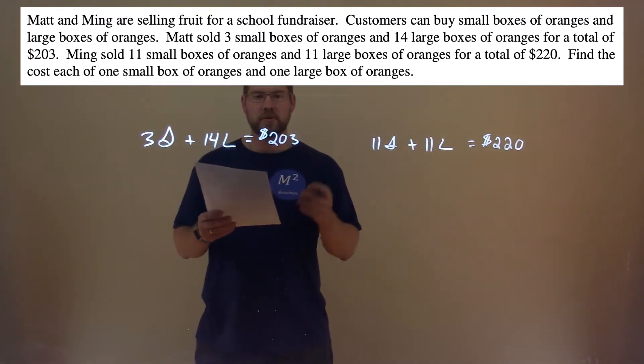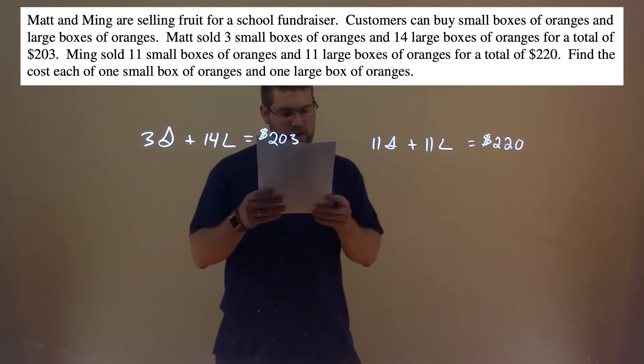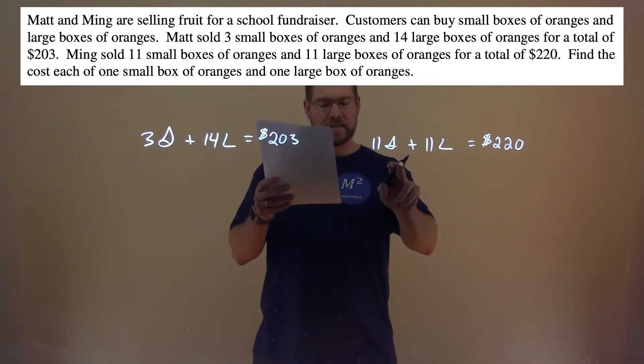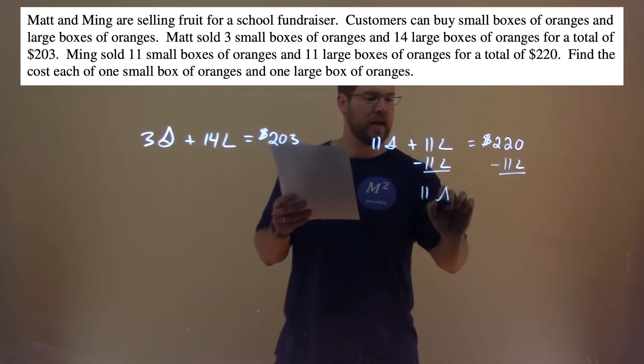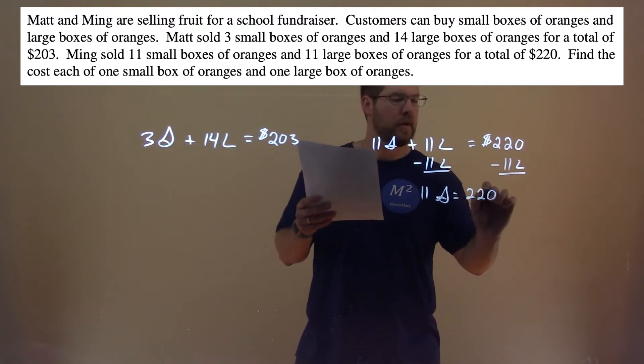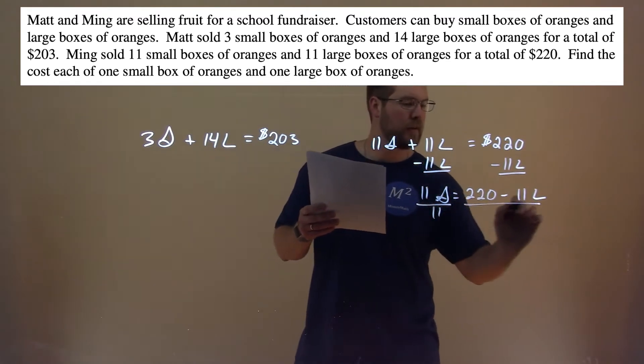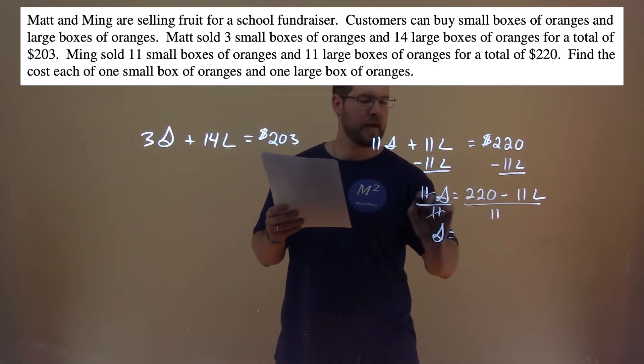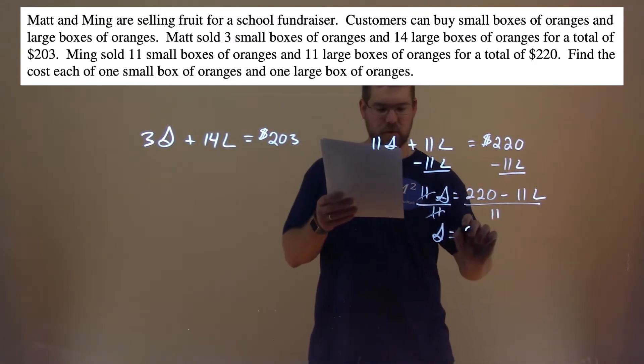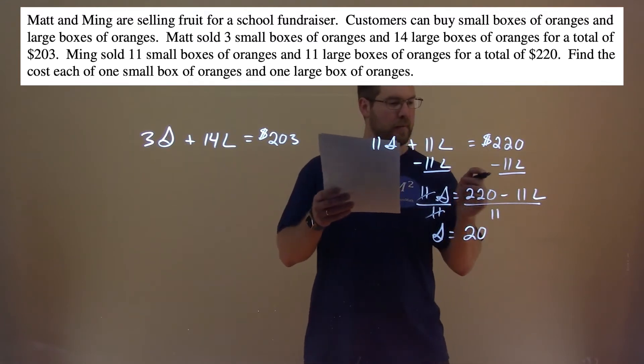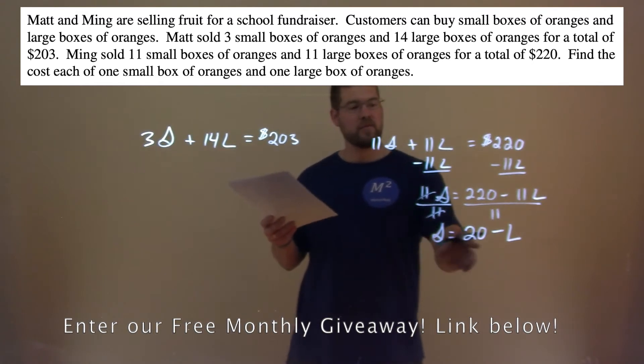We now want to use that information to solve for our variables using a system of equations. I'm first going to try to get S by itself. To do that, I subtract 11L to both sides. We're left with 11S equals 220 minus 11L. If I divide 11 to both sides, S is by itself. That cancels, and make sure you divide 11 to both parts. 220 divided by 11 is 20, and 11 divided by 11 is 1, so we're left with just L.